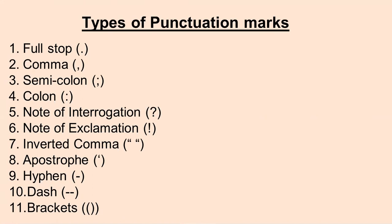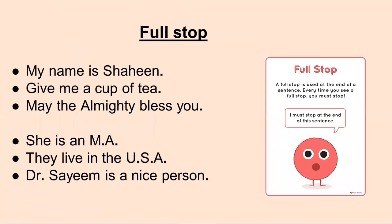Now have a look at the full stop. Here are some sentences. First: 'My name is Shaheen' — it's a declarative sentence, and at the end there is a full stop. Next: 'Give me a cup of tea' — it's an imperative sentence, and after the sentence there is a full stop. Each is a complete sentence, and after each complete sentence we use a full stop.